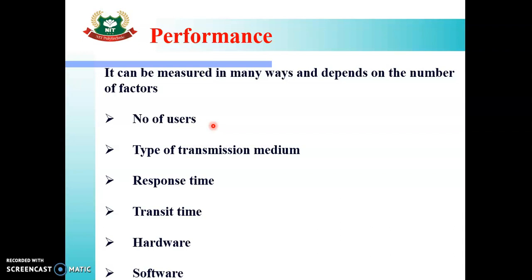The next factor is type of transmission medium — which type of medium we are using for data transmission, whether wired medium or wireless medium. This also affects performance. Then, response time — how much time a data packet takes to be sent and how much time the receiver takes to receive it. This also indicates performance.